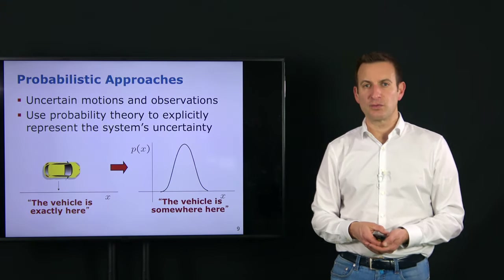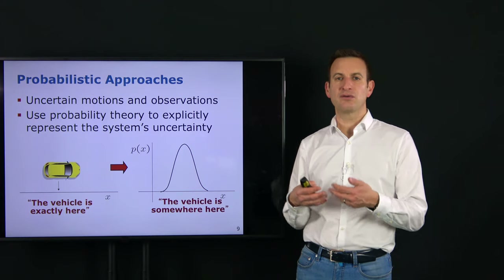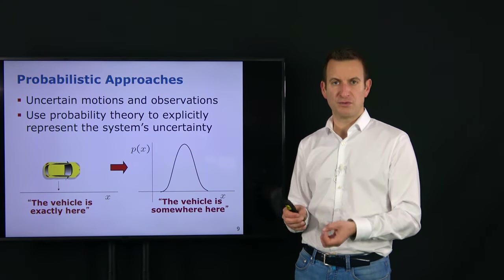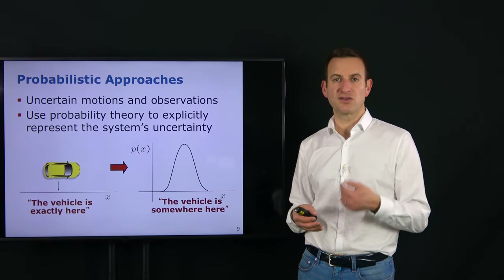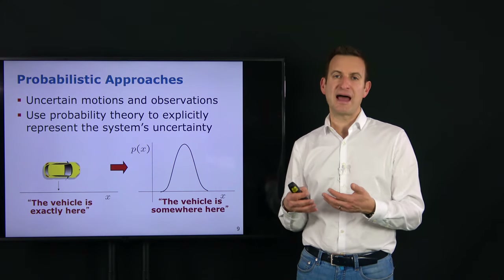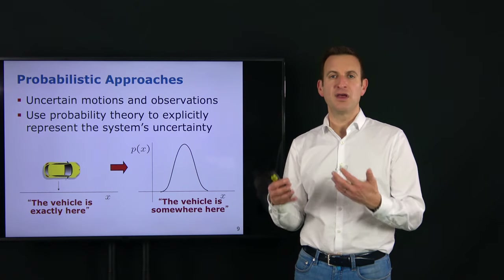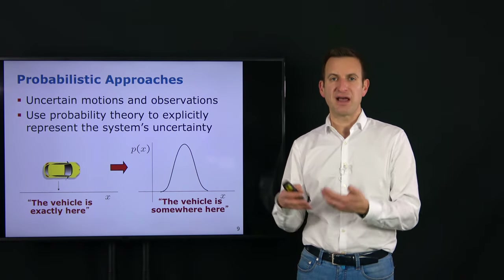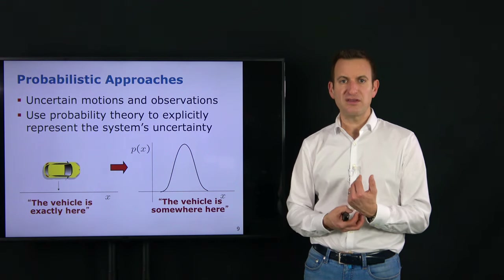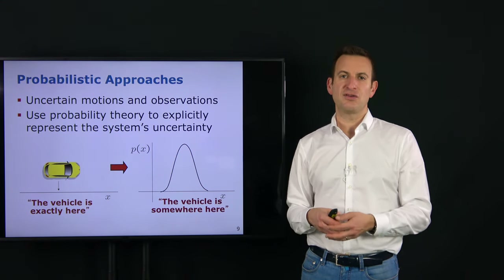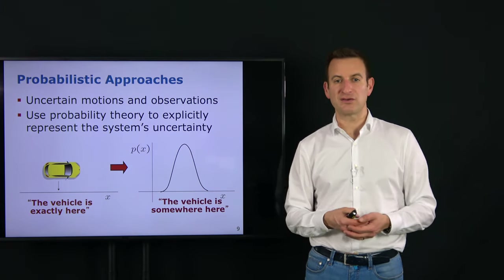Most techniques for robot localization used today are probabilistic approaches. That means they take into account that observations are not perfect — they are affected by noise — and the same holds for motion commands. Sending a certain motion command, we cannot rely on the platform precisely executing it; there will always be noise associated because it will never precisely execute the command. Probability theory allows us to represent these uncertainties and take them into account when performing our estimation approach.